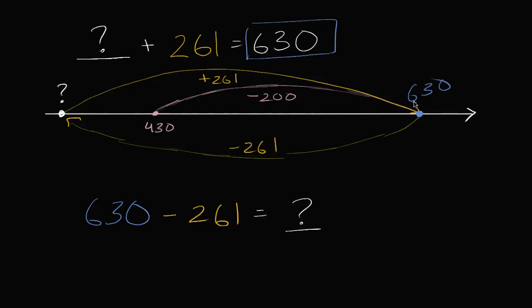And now I wanna subtract 60, so then I would subtract 60, so minus 60. So let's see, 430 minus 60. That's 43 tens minus 6 tens. Well that's gonna be 37 tens, or 370. This gets us to 370.